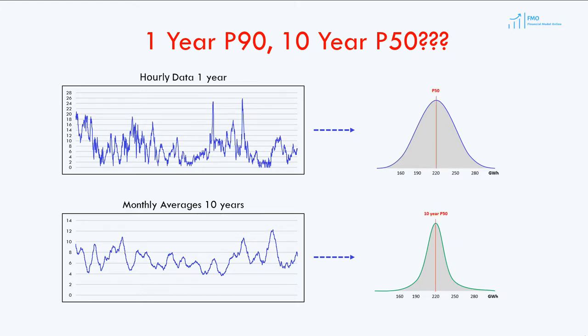While production levels corresponding to P50 are similar for both datasets, higher P-values such as P90 will have different production levels. P90 for 1-year data is always lower than P90 for 10-year data, and therefore P90 for 1-year data is considered a conservative, worst-case scenario, while P50 is considered the base-case scenario. You will often hear investors, bankers, and engineers discussing 1-year P90 or 10-year P50, and now you know what it means.